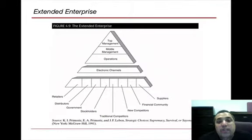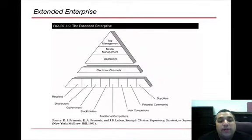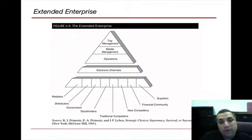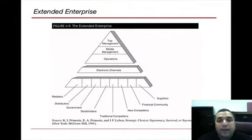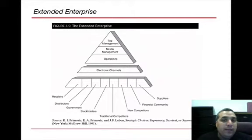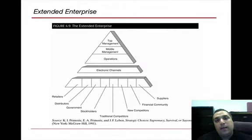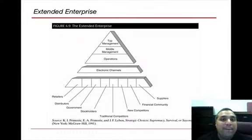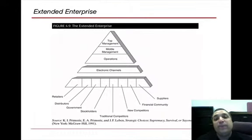The extended enterprise basically focuses on the fact that we have top management, middle management, operations, electronic channels, and then a whole bunch of other external entities. We could simplify this and say you have internal stakeholders and external stakeholders. The internal stakeholders would be the top three parts of this pyramid. The electronic channels are the means by which we communicate with external stakeholders at the bottom. In enterprise architecture analysis, you will see how we look at that as part of the overall business architecture, showing the difference between internal and external stakeholders and the information flow between them.